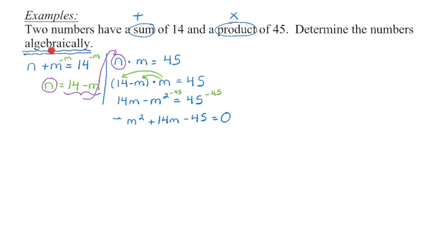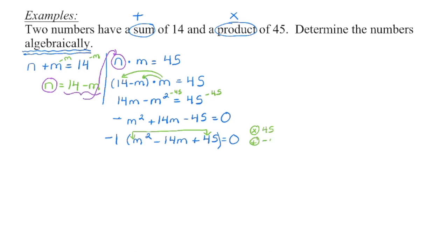It says I have to solve it algebraically — I can't graph it. I'm going to check first if I can factor it. I don't want to deal with this negative leading coefficient, so I'm going to factor out a negative one. That gives us m squared minus 14m plus 45 equals zero — basically switching all of those signs. I've got an a value of one and a c value of 45. Are there two numbers that multiply to 45 and add to negative 14? In this case, negative five and negative nine are the two values we're looking for.